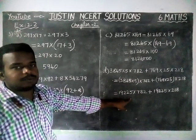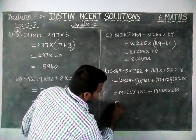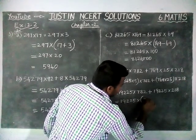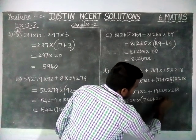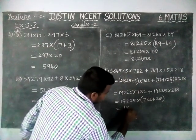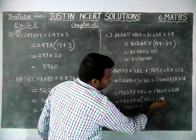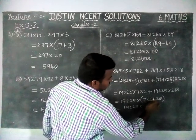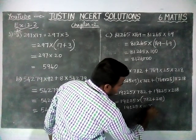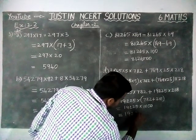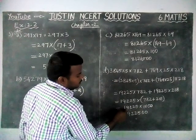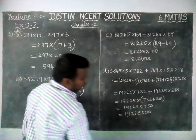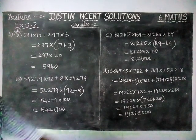Now we are going to use the distributive property of multiplication over addition. Here, 19,225 is common, so we take 19,225 outside and the remaining is 782 plus 218. Adding these two: 8 plus 2 is 10, remaining 1; 8 plus 1 is 9, plus 1 is 10, remaining 1; 7 plus 2 is 9, plus 1 is 10. So 782 plus 218 equals 1000. We have three zeros, so 19,225 into 1000 gives us 3 zeros to add at the end. The answer is 1 crore 90 lakhs 22 thousand 500, i.e., 1,90,22,500 for option D.